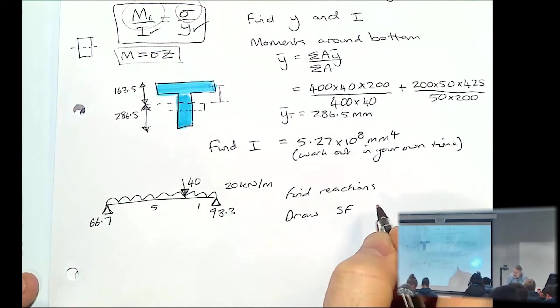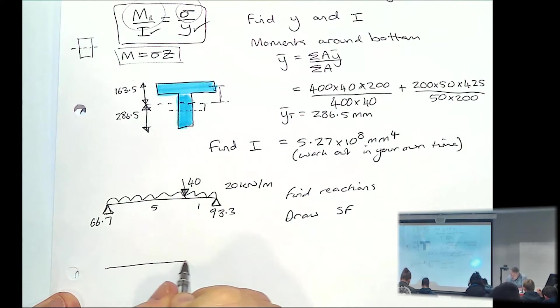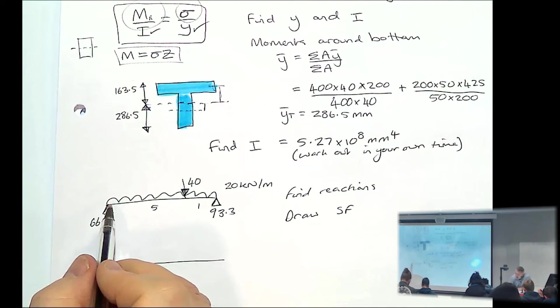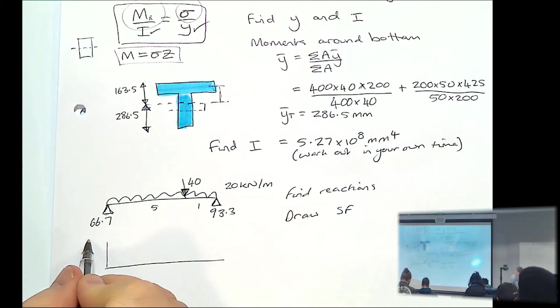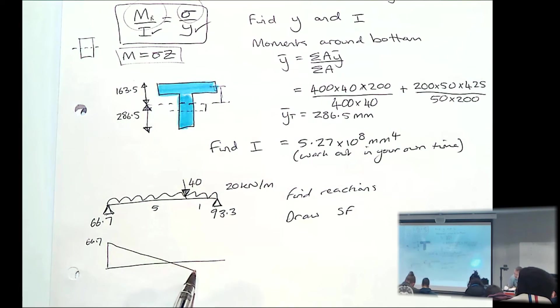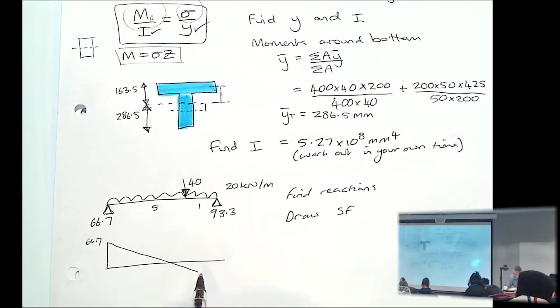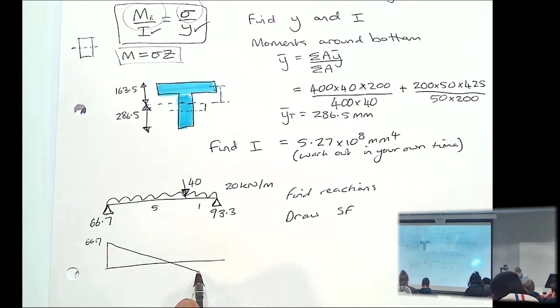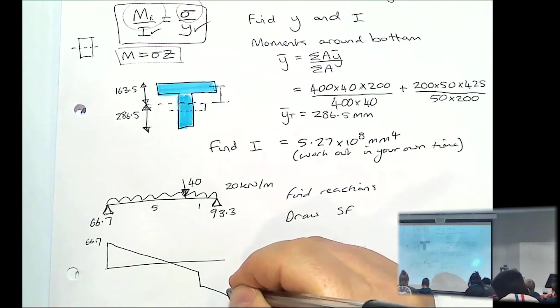That's in order to find out the position of zero shear. So to draw the shear force diagram, we'd be going up 66.7. Then we'll be dropping down 20 every metre, down until we reach this point, 40. Then we'll drop down 40. Then we'll continue down. And then we go up 93.3.